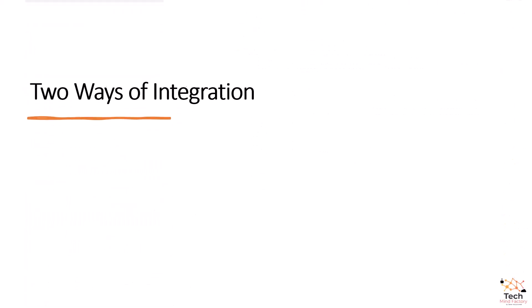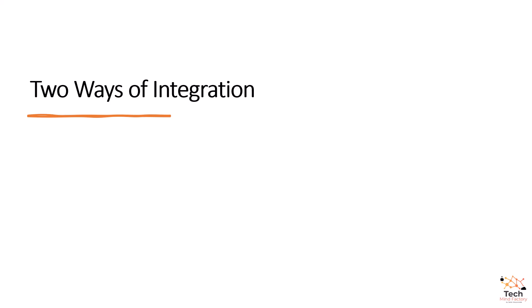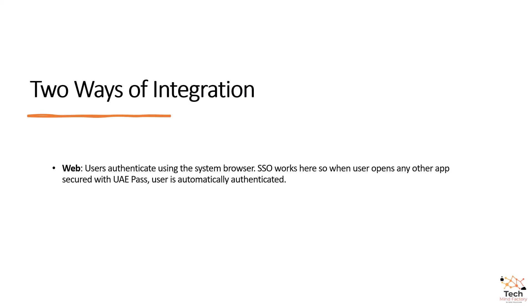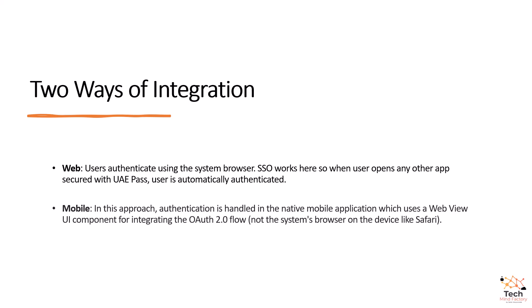There are two possible ways to integrate authentication with UAE Pass. The first one is web, where users authenticate using the system browser. Single sign-on works here, so when a user opens any other application secured with UAE Pass, the user is automatically authenticated. The other possible way is the mobile approach, where authentication is handled in the native mobile application using a WebView UI component for integrating the OAuth 2 flow — not the system browser on the device, like Safari on iOS. In this video, we are going to see how to implement authentication with UAE Pass using the web approach.